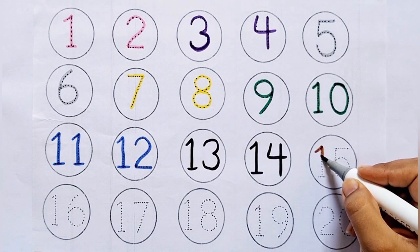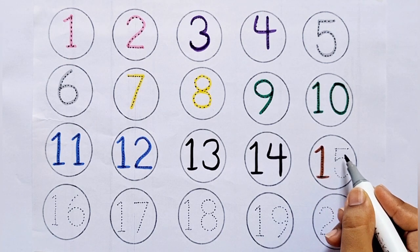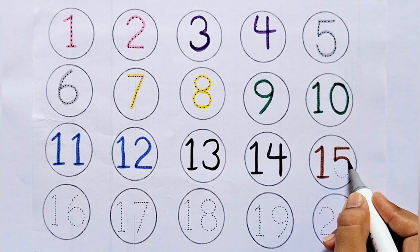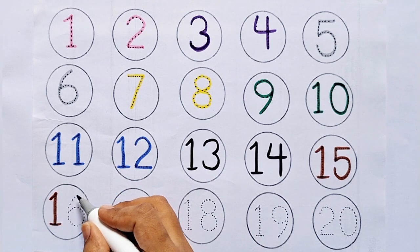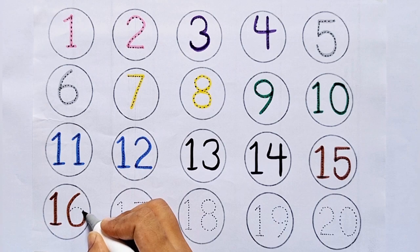15. 1-5, 15. After 14 comes 15. 16. 1-6, 16. After 15 comes 16.